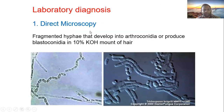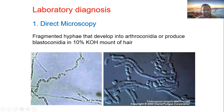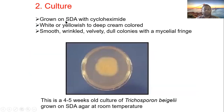For laboratory diagnosis, direct microscopy is performed. Fragments of hyphae that have developed into arthroconidia or produce blastoconidia are seen in 10% KOH mount. Under the microscope, arthroconidia appear as block-like structures. Culture is performed on SDA with cycloheximide, which acts as an inhibitory substance. White to yellowish, deep cream-colored, smooth to wrinkled, velvety colonies with mycelial fringe are seen, taking four to five weeks to develop.